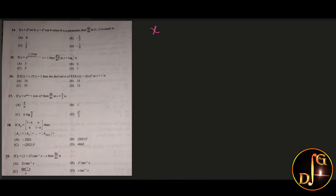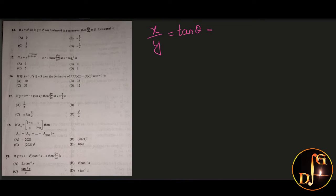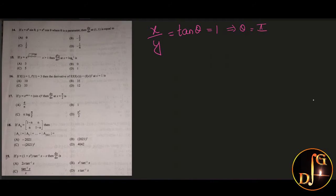Consider x by y: that is e^θ sin θ divided by e^θ cos θ, which is nothing but tan θ. They have given x equal to 1 and y equal to 1. At x and y equal to 1, tan θ will be equal to 1, which means θ is equal to π/4.